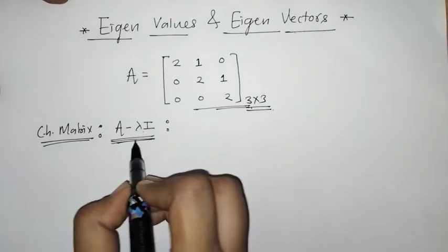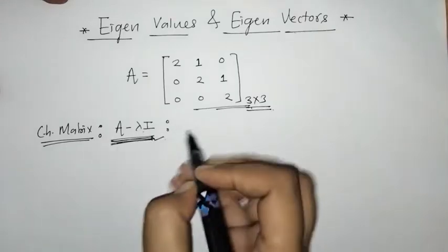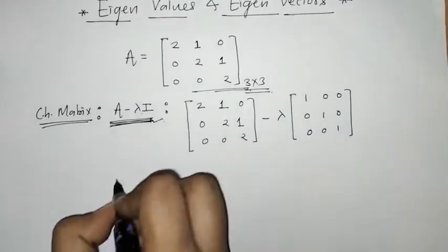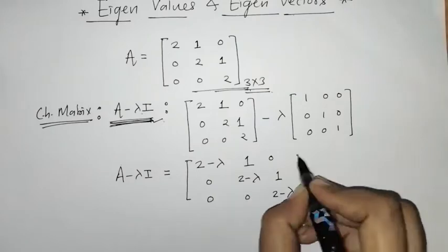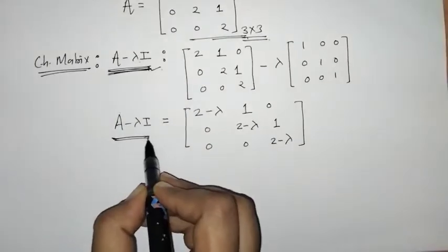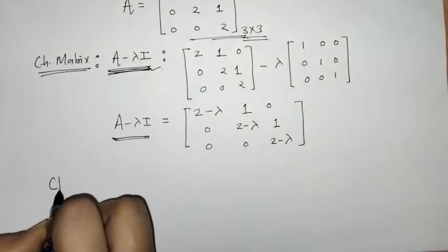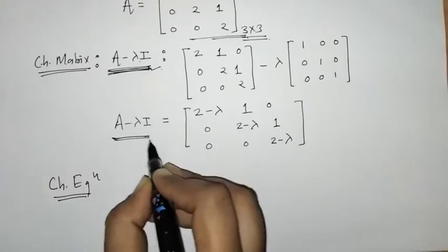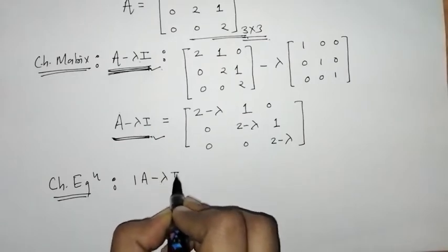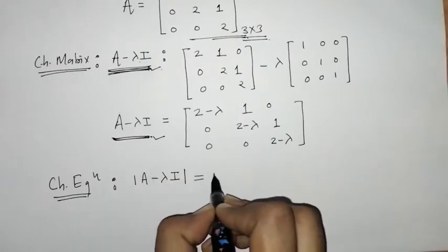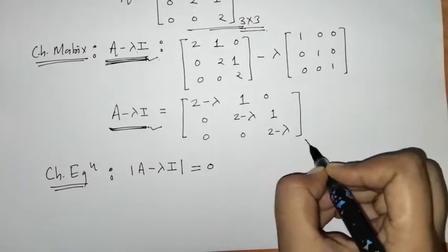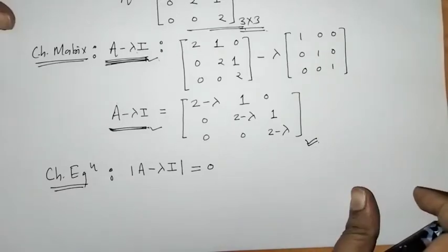We have to find this characteristic matrix. Now we have to find the characteristic equation, which is given by the determinant of this matrix equals zero. So we write down: determinant of A minus lambda I equals zero.